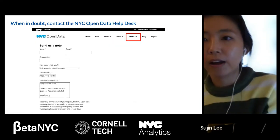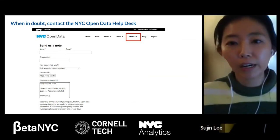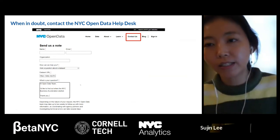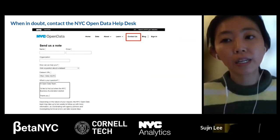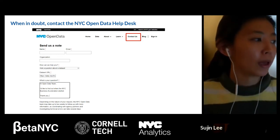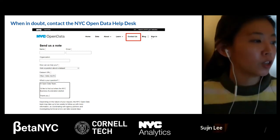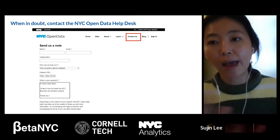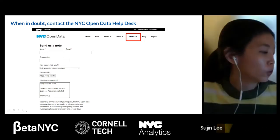While you're really digging into the open data set, you might have further questions. The open data team and city agencies try their best to fill out all of the information in the data dictionary, but there might still be questions you have. I highly recommend contacting the NYC Open Data help desk if you have any questions. In the tab navigation, you can find the 'Contact Us' menu on every page in open data — you can contact the help desk with your questions.